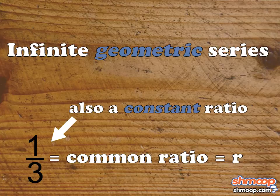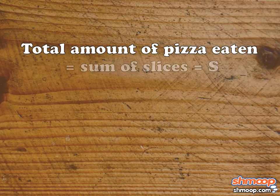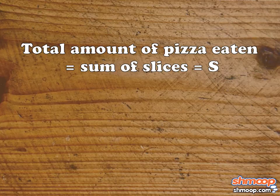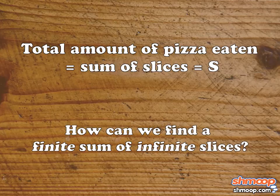Now that we've identified the type of numbers we're dealing with and the common ratio between them, let's get back to the problem. If we want to find the total amount of pizza Pepe ate, we should add all the slices together and find the sum. But wait, if he's eating infinite slices, how can we find a finite sum?